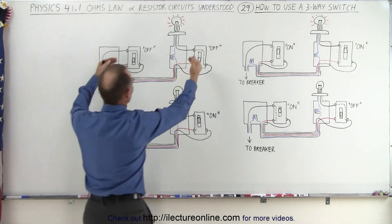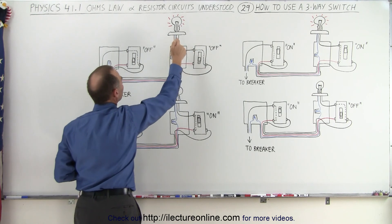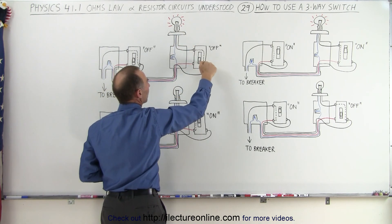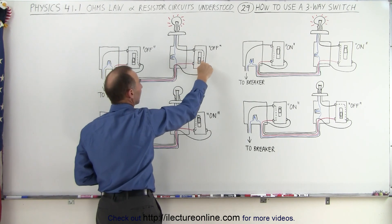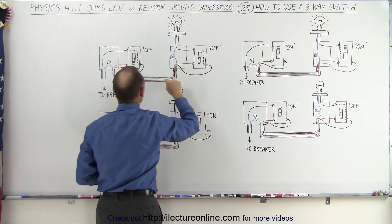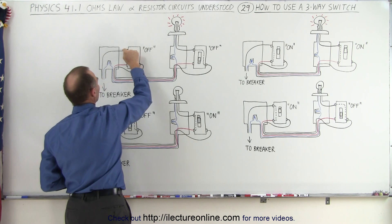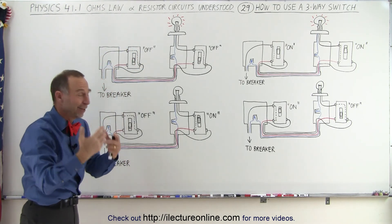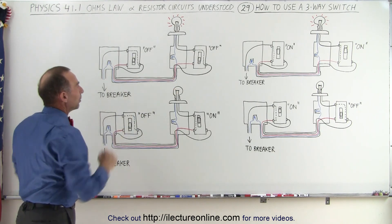In the off position, when both switches are in the off position, you again have the blue wire making one connection. With the black wire, notice you go from the top left to the bottom right. Instead of connecting via the red wire, it's now done via the black wire. The black wire comes over, and if this switch is in the off position, it makes a connection to the top left, which is then connected back to the breaker switch. So in that case, you also have the light bulb on.